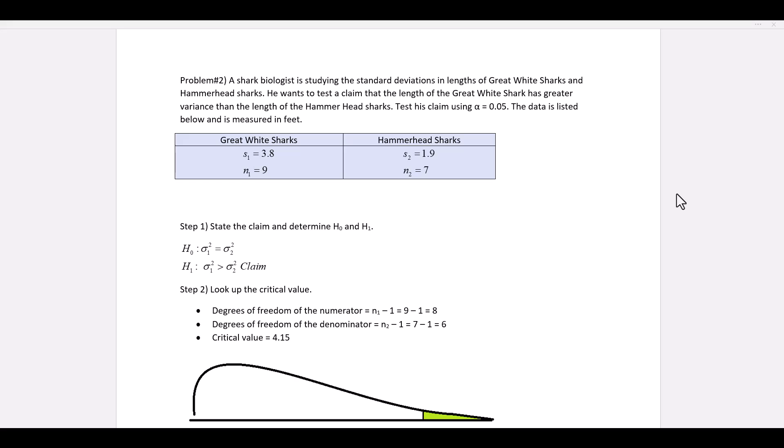The problem states the following: A shark biologist is studying the standard deviations in lengths of great white sharks and hammerhead sharks. He wants to test a claim that the length of the great white shark has greater variance than the length of the hammerhead sharks. Test his claim using alpha equal to 0.05. The data listed is measured in feet.